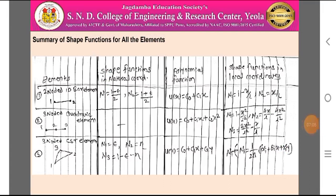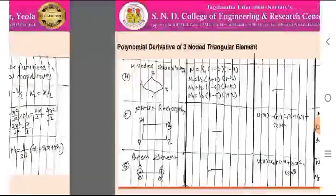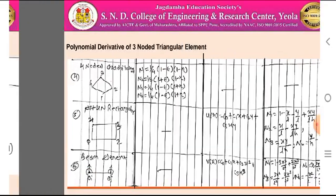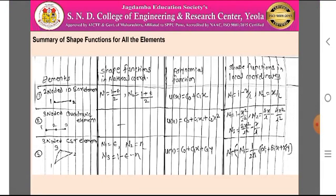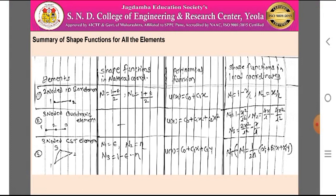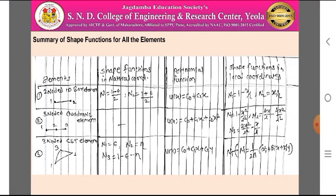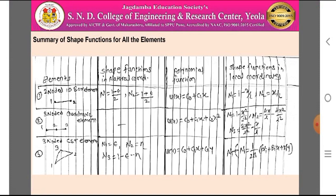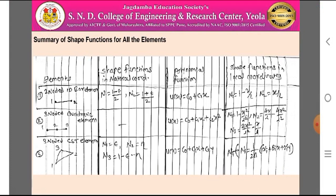Now for the summary of all shape functions for all elements: the table has four columns. The first column gives the elements and their shape. The second column gives shape functions in natural coordinates. The third column gives the polynomial function, and the fourth column gives shape functions in local coordinates.